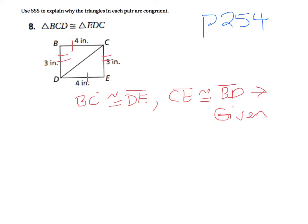Segment CD is one of my sides in triangle BCD, and side CD is one of my sides in triangle CED. So that is an example of reflexive property. I'm going to mark that as my third side. I'm going to write that segment DC is congruent to segment DC, and the reason is the reflexive property of congruence.